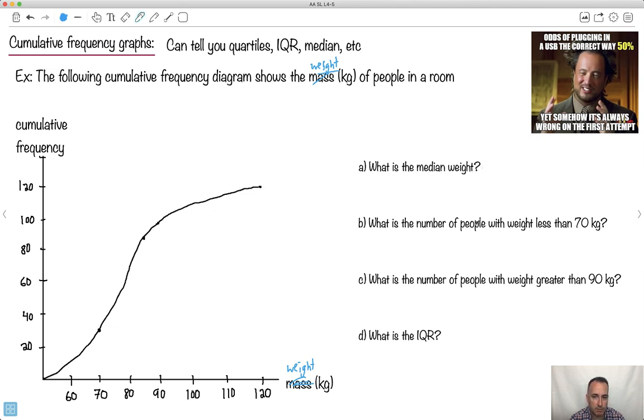So the question would be, what's the median weight? What's the number of people who weigh less than 70? How many people weigh greater than 90? And what's the interquartile range? That seems really hard from this. You might think, oh, God, I need a calculator for this. But no.